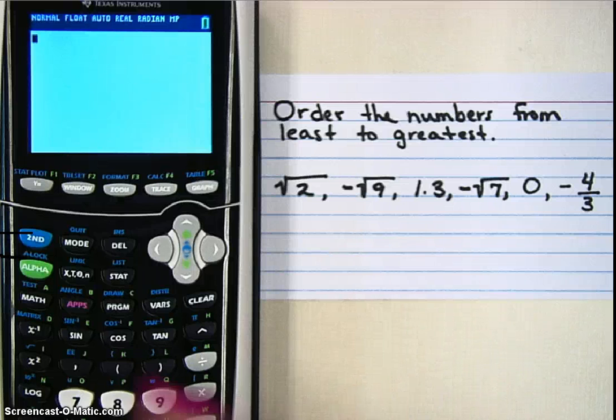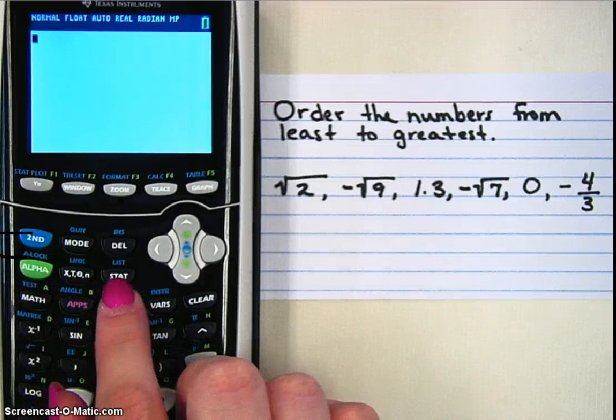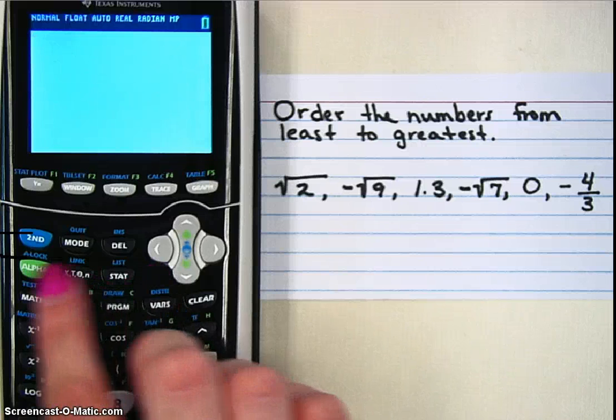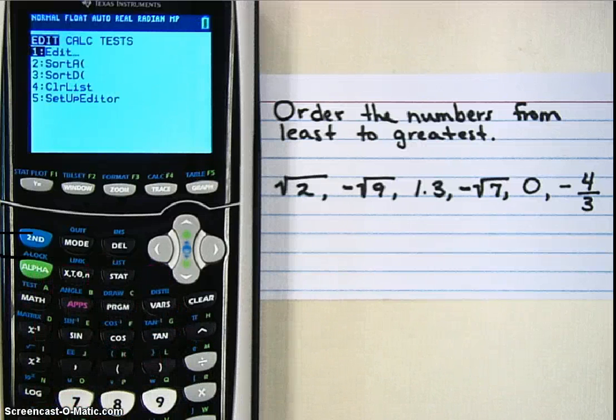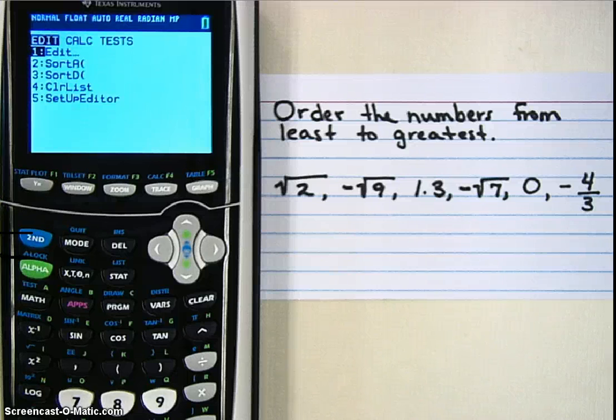So the first thing we need to do is hit the STAT button, S-T-A-T. It's right here next to the arrow buttons across from the green button. When I hit that, a list of options come up.